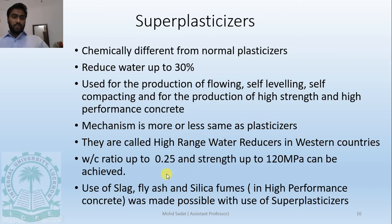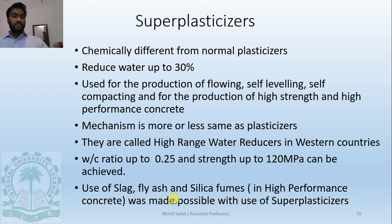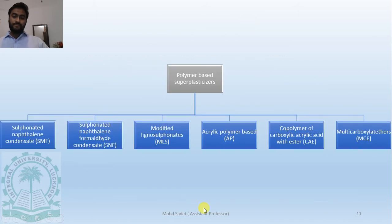If we use slag, fly ash, or silica fumes, workability decreases. But if we use super plasticizers, the workability is improved. The use of such chemicals has made it possible to use slag, fly ash, and silica fumes, which have other advantages such as cementitious properties. Some polymer-based super plasticizers are available in the market — you can go through their names and look them up.